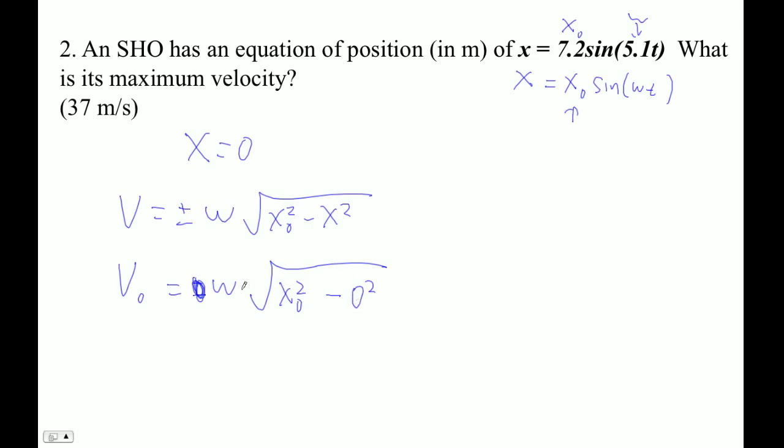So this thing always collapses down into omega times x naught, because the square root of x naught squared, or the amplitude squared, is just the amplitude.